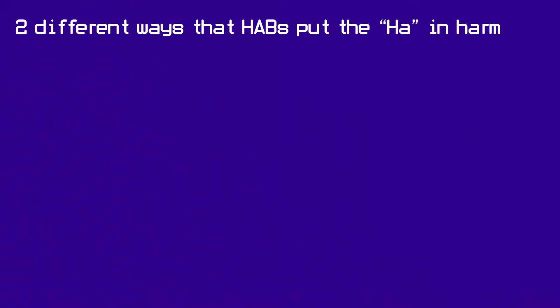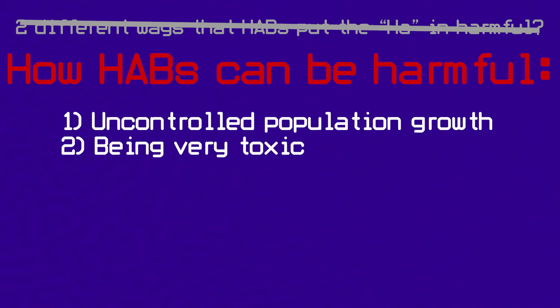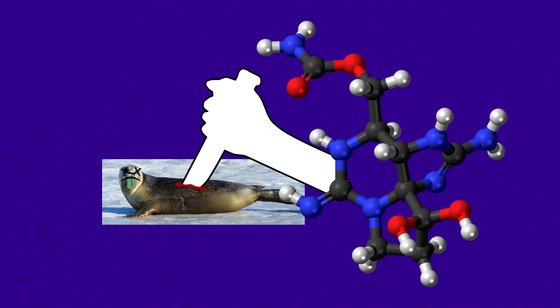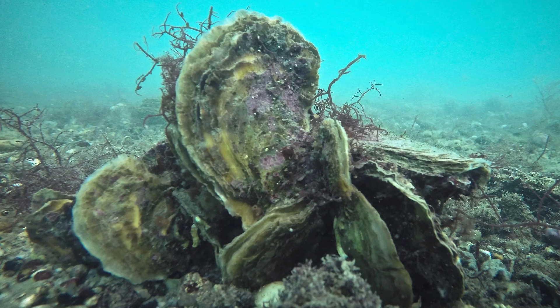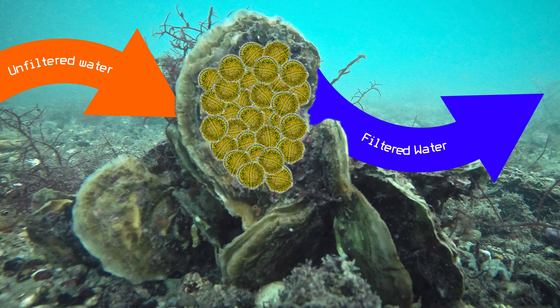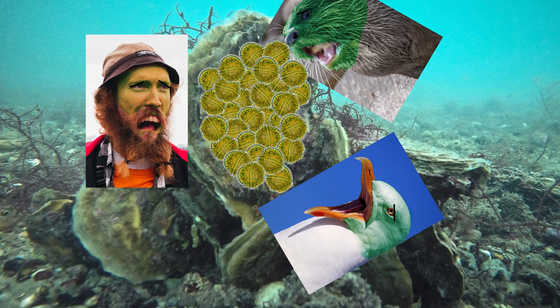At the end of the last video I was talking about how there are two different ways that HABs put the HA in harmful. The first is through uncontrolled growth, and the other is just by being very toxic, and a lot of toxic HABs are caused by dinoflagellates. Dinoflagellates are quite fond of neurotoxins, which are strong enough to kill birds, marine mammals, and us too, and the most common vector of these poisons is through shellfish. Most shellfish are filter feeders, so as they are filtering the water for food, these toxic dinoflagellates accumulate inside of them, and then we eat them. Or a bird eats them. Or an otter eats them. And then we die. But we don't always die. Sometimes we just get really sick.